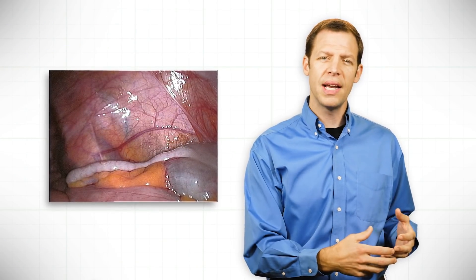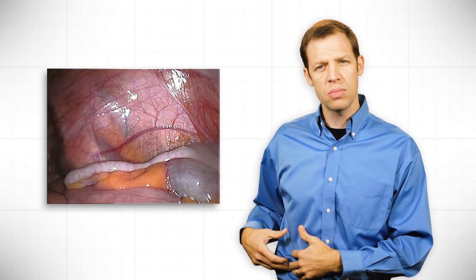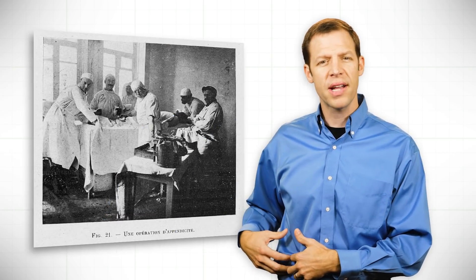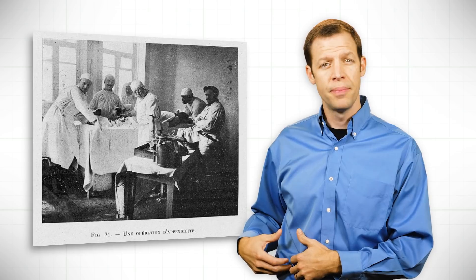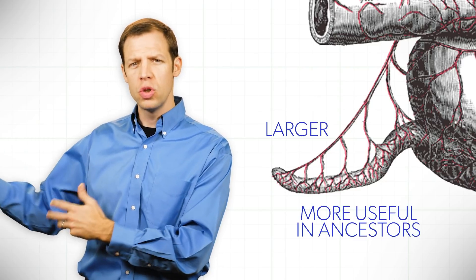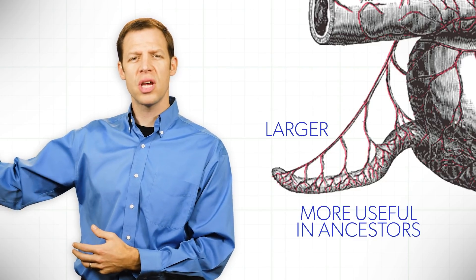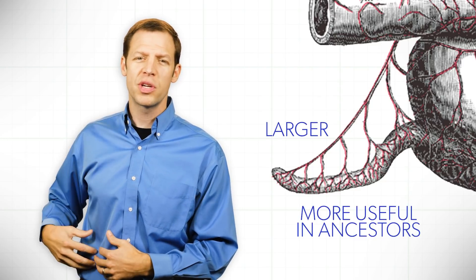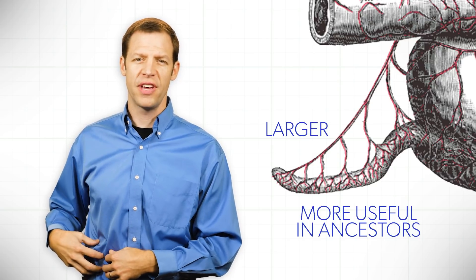Supposedly in our precursors it was much larger and now we no longer need it. It has gotten smaller and it causes problems sometimes because it can get infected and cause appendicitis. And so we're told that that's a leftover of evolution. That it was larger and more useful in our precursor ancestors, but we don't need it now and so it's atrophying. The problem with this is that's simply not scientific.